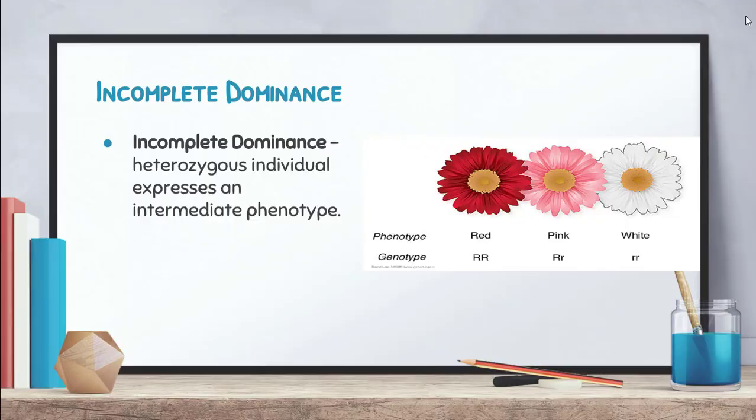The first type is incomplete dominance. The rules for doing Punnett squares are always exactly the same — the only difference is that a heterozygous individual expresses an intermediate phenotype, somewhere in between the dominant and recessive. For example, snapdragon flowers: two big R alleles gives red, two lowercase R's gives white, but one big R and one little r gives pink. In normal Mendelian inheritance the dominant would mask the recessive, so heterozygous would be red — but with incomplete dominance, it's pink. The problem will tell you this.